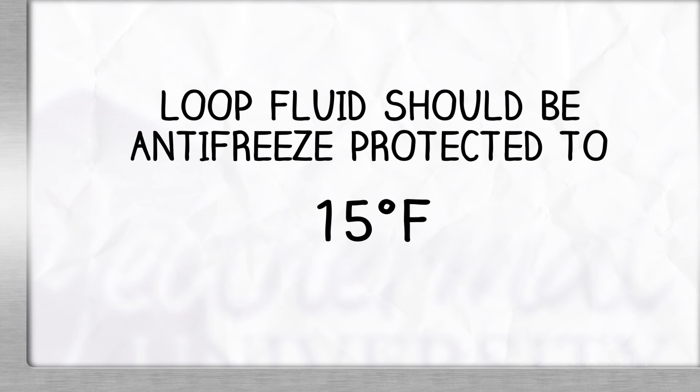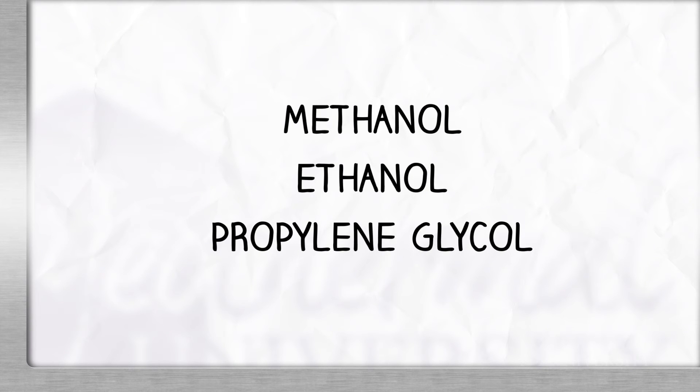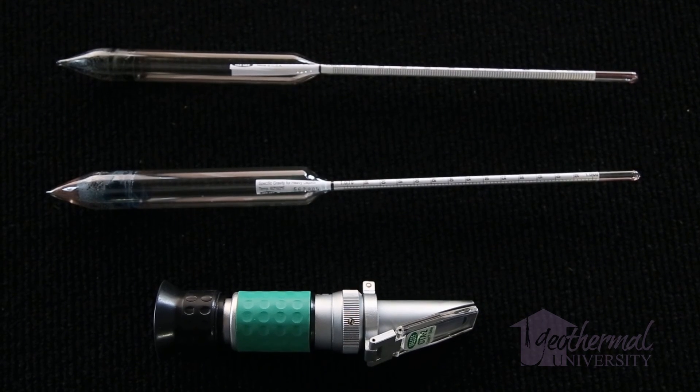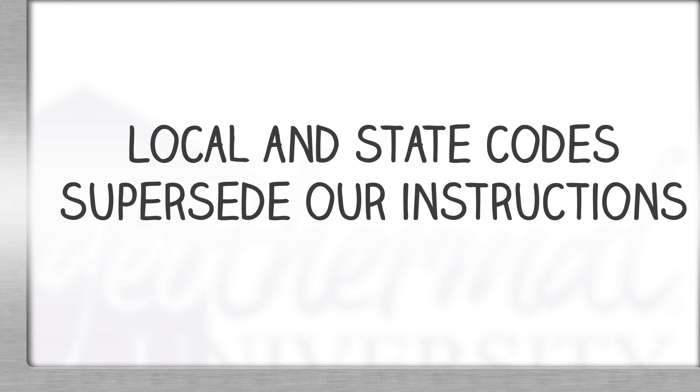Loop fluid should be antifreeze protected to 15 degrees with an approved fluid type, typically methanol, ethanol, or propylene glycol. Test with the proper hydrometer. Local and state codes supersede any instructions in this video or our installation guides.